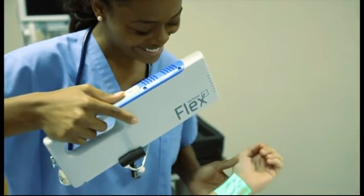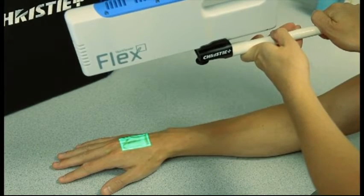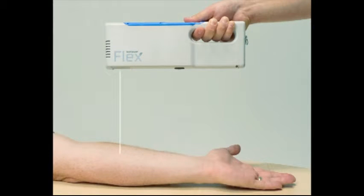VainViewer Flex is simple to focus and use. The proper focal distance for VainViewer Flex is 12 inches or 30 centimeters from the surface of the skin.